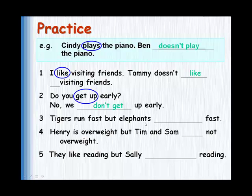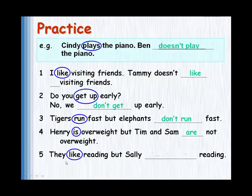Tigers run fast, but elephants don't run fast — that's the negative form of run. Henry is overweight, but Tim and Sam are not overweight. This example is slightly different because it uses the verb to be, and negatives with to be are made differently — they don't use don't or doesn't; we'll see that in another video. They like reading, but Sally doesn't like reading — Sally is she, so we use doesn't.